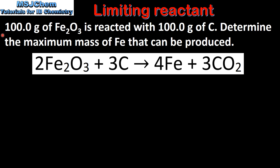In the next example we will determine the maximum mass of product that can be produced in a chemical reaction. One hundred grams of iron oxide is reacted with one hundred grams of carbon. Determine the maximum mass of iron that can be produced. Here we have the balanced equation for the reaction: iron oxide reacts with carbon to form iron and carbon dioxide.